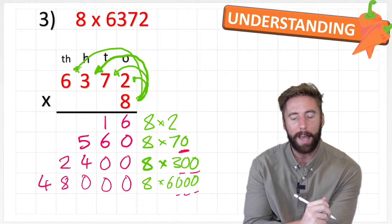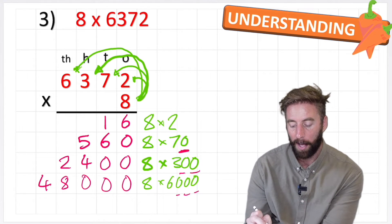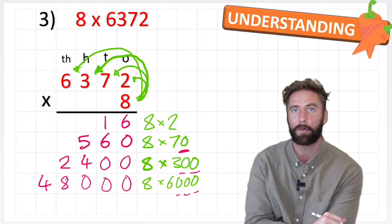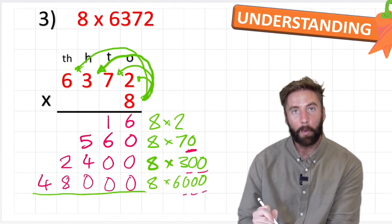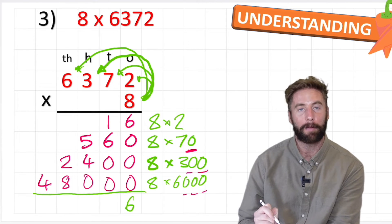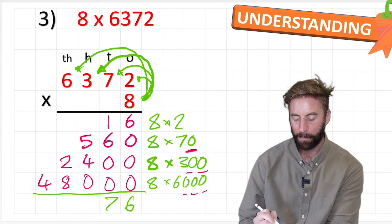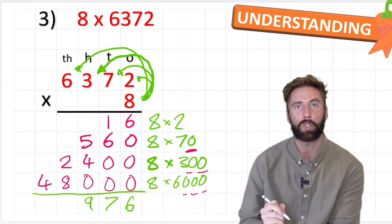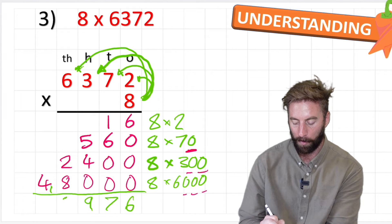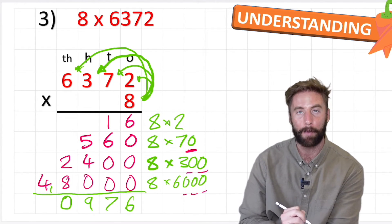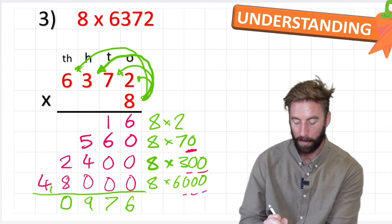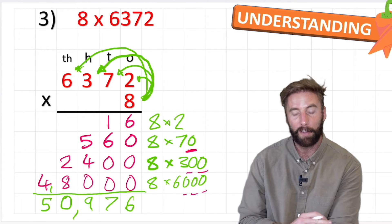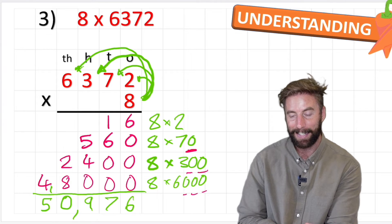Am I finished? Not yet, because I've partitioned all my questions and done the individual sections. Now I need to put it back together and add up for the final total. Ones column: just a 6. Tens: 1 and 6 equals 7. Hundreds: 5 and 4 equals 9. Thousands: 2 and 8 equals 10 — carry the 1, put 0 in the thousands column. Ten-thousands: 4 plus 1 is 5. So my answer to 8 times 6,372 is 50,976.